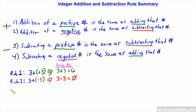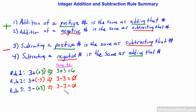Rule 3 example: Subtracting a positive number is the same as subtracting that number — nothing new here. Three minus positive three is the same as three minus three, which equals zero. Subtracting that positive is the same as just subtracting that number.